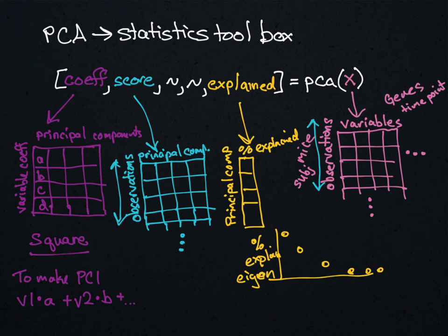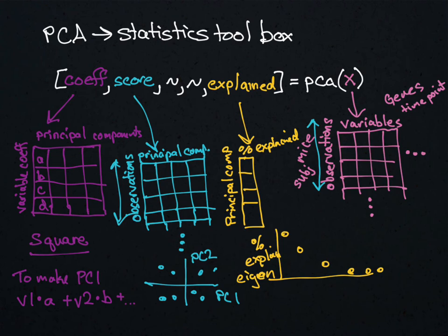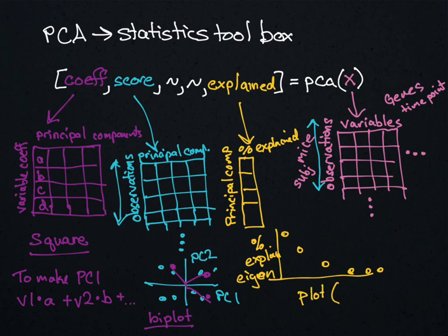The score matrix is how you create the score plot, where you have principal component 1 and principal component 2 if you're just looking at the first two. You can plot each observation from the score matrix, and you plot the principal components from the coefficient matrix. If you want to do this in MATLAB, you would use the biplot command — there's a special command for this kind of graph. To do the score plot, you can just use the regular plot function and pass in the explained values from 1 to 10 if you want to look at the first 10 values.